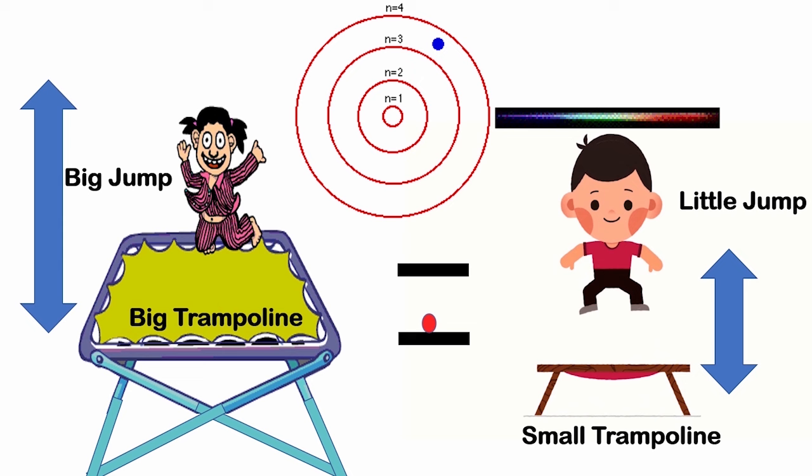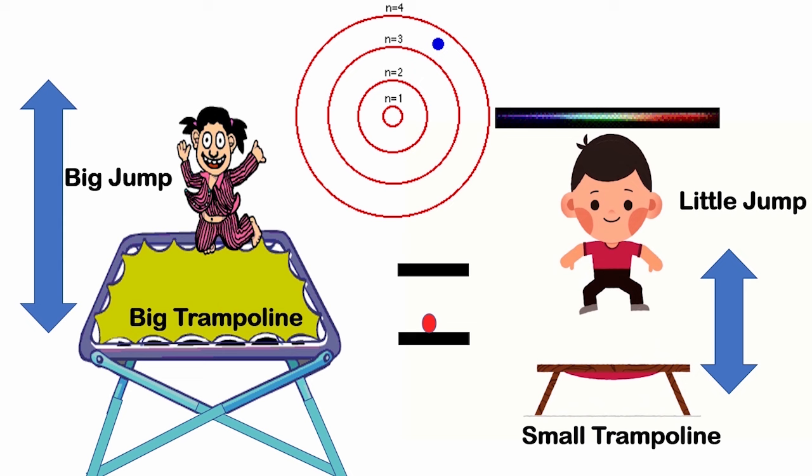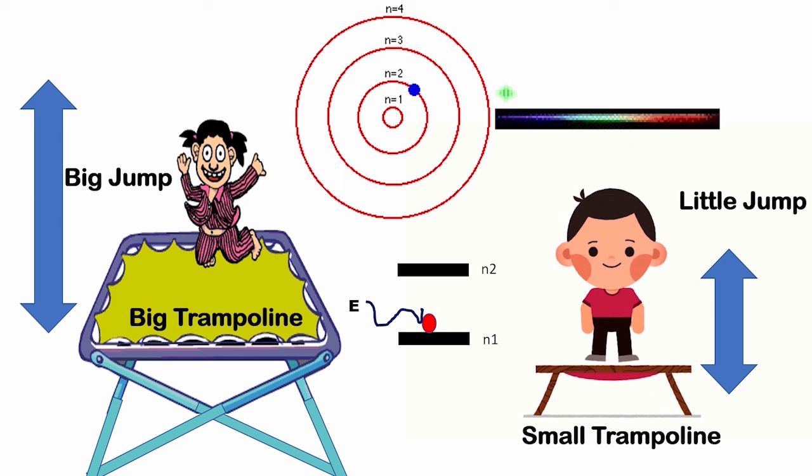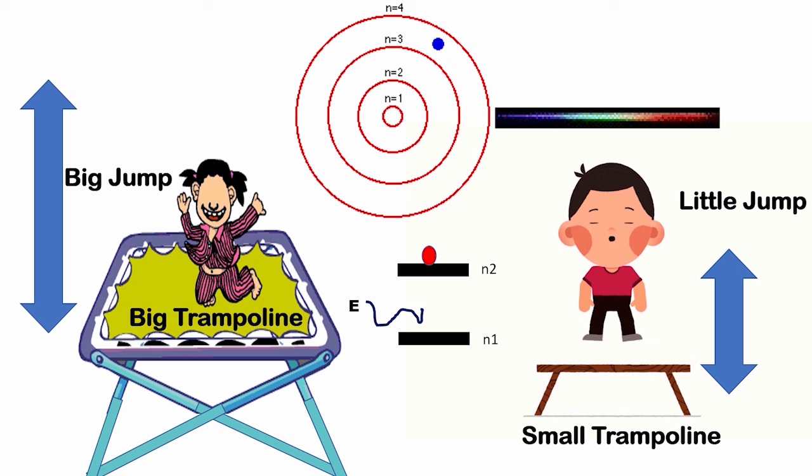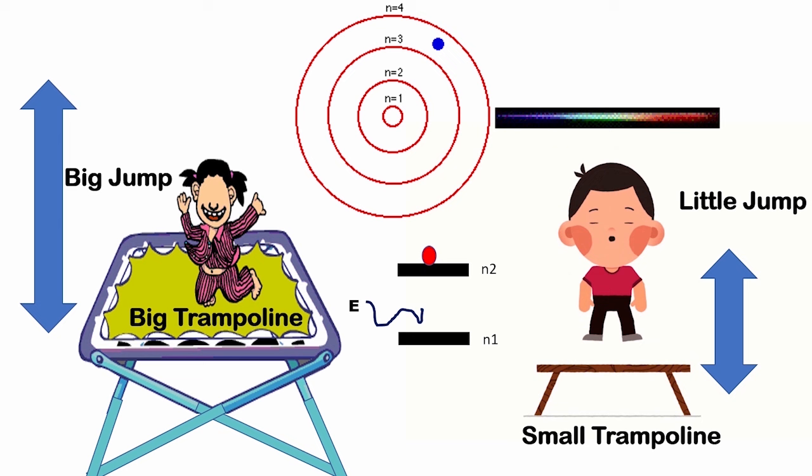In a small quantum dots, electrons are confined in a tiny space similar to the boy on the small trampoline. In a quantum dots, electrons can only exist at specific energy level just like a boy or a girl can only exist at certain height when bounce on the trampoline.